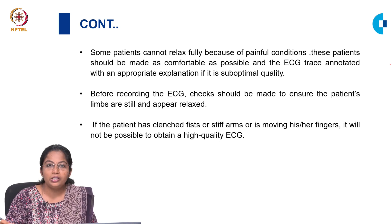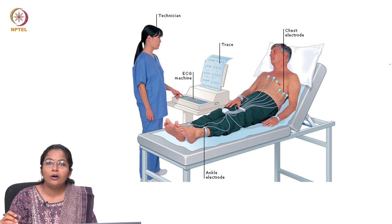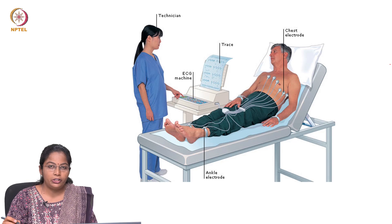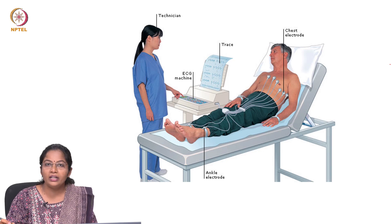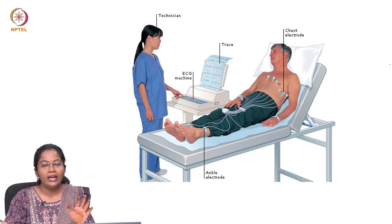Before recording an ECG, make sure the patient is still and relaxed. This picture shows the normal positioning of a patient, where the patient is completely relaxed sitting in a semi-recumbent position with 45 degree inclination, with the recorder standing to the right side of the patient while an ECG recording is made.